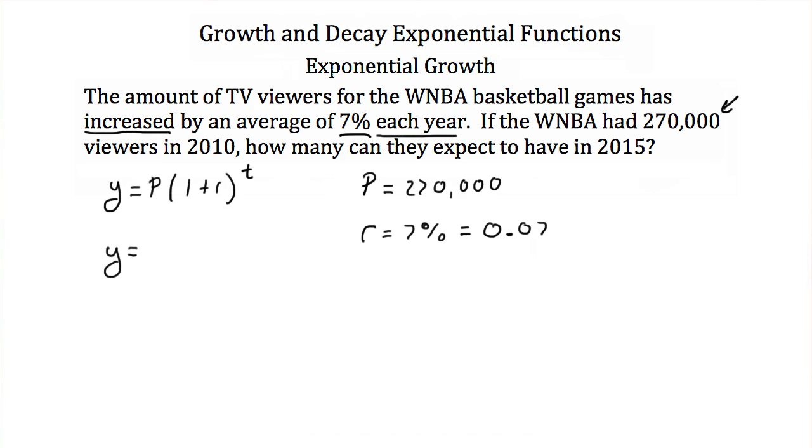So we have most of our formula here. We're up to y equals 270,000 times 1 plus 0.07 raised to the t. Now we want to find how many viewers they can expect in 2015. In 2010, they had 270,000. So let's call 2010 time equal to 0. If we do that, that means our t in 2015 is going to be equal to 5.